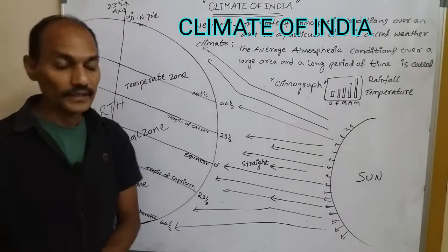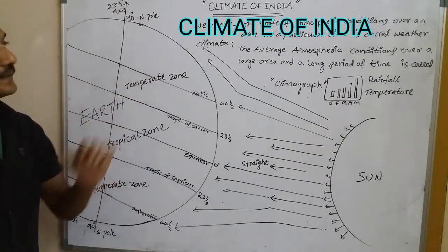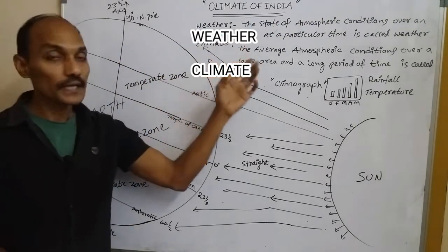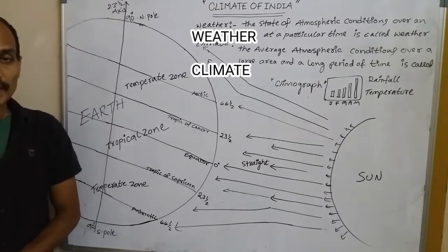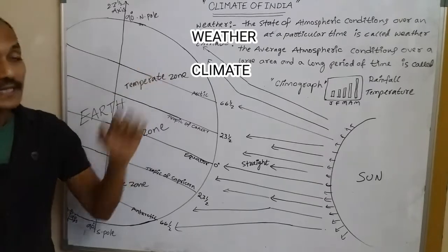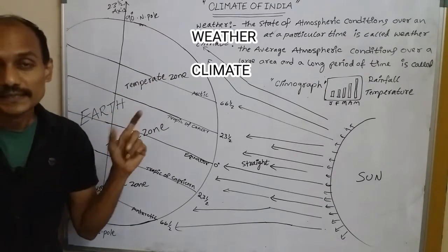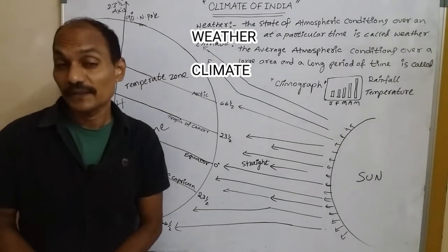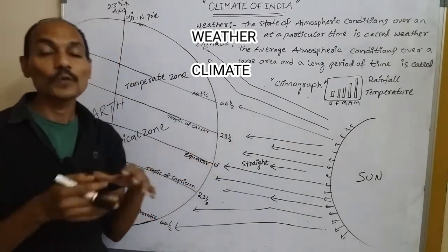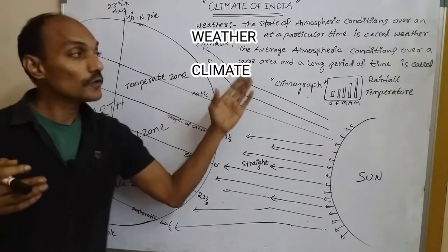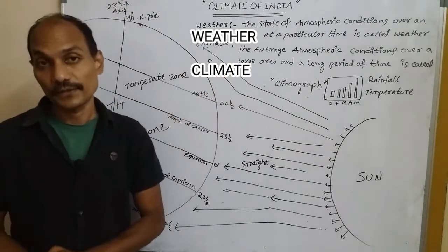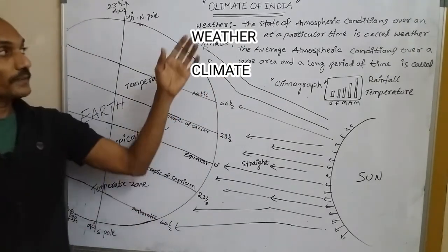This is the fourth chapter. First, we need to know what is weather and what is climate. Weather means the state of atmospheric conditions of an area at a particular time. Climate means the average atmospheric conditions over a large area over a long period of time — nearly 30 years.